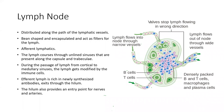Lymph nodes are distributed along the path of lymphatic vessels — there are thousands in our body. These bean-shaped, encapsulated structures act as filters for lymph. Afferent vessels enter through the convex side; the interstitial fluid moves into the sinuses. During passage from cortical to medullary sinuses, lymph is modified by immune cells and leaves through efferent lymphatics rich in antibodies. The hilum also serves as an entry point for nerves and arteries.